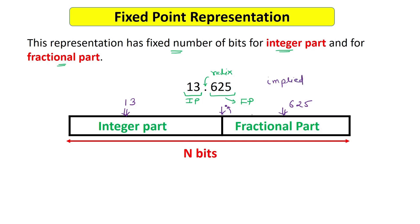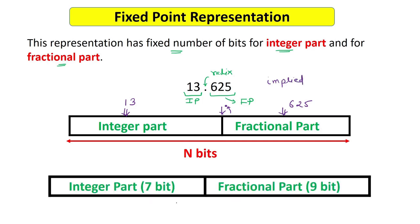Let's say your computer has 16 bits total to store 13.625. The CPU designer may reserve 7 bits for the integer part and 9 bits for the fractional part. The position of the decimal point is fixed, and the number of bits for the integer and fractional parts are fixed. Anyone reading your program must know how many bits are reserved for each part.